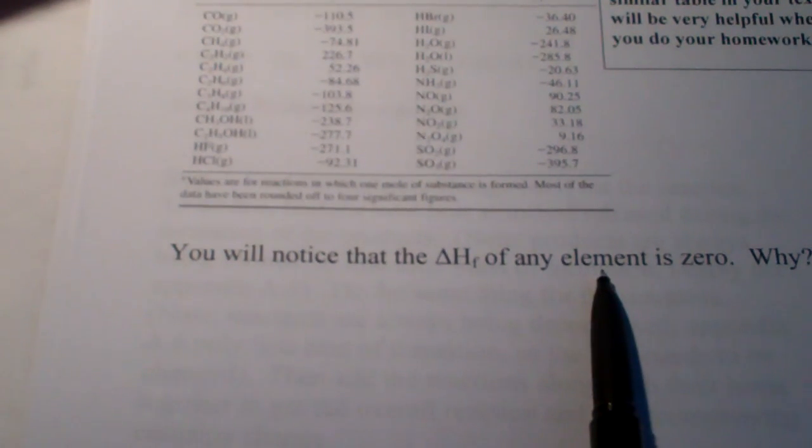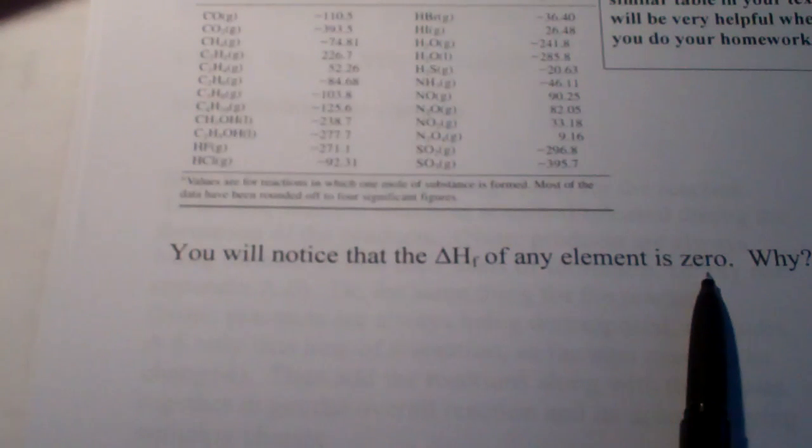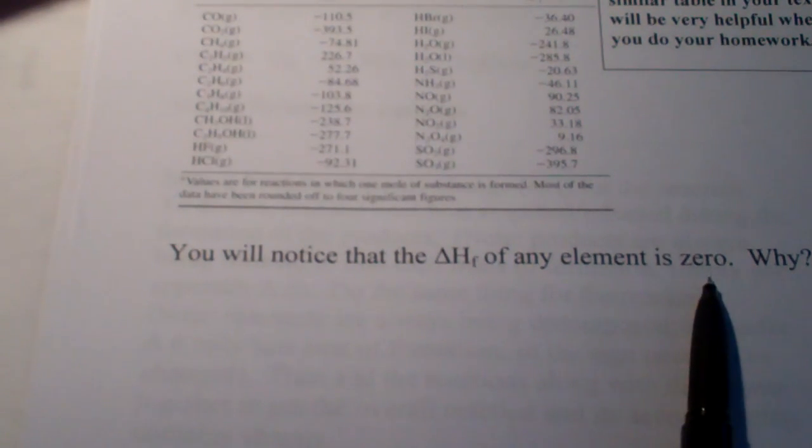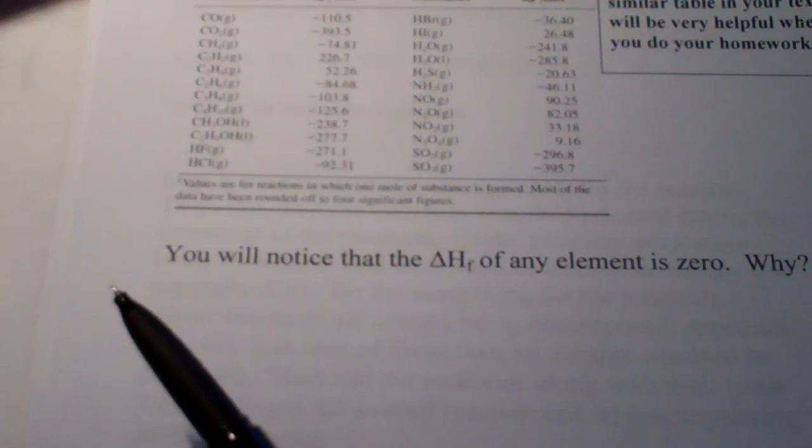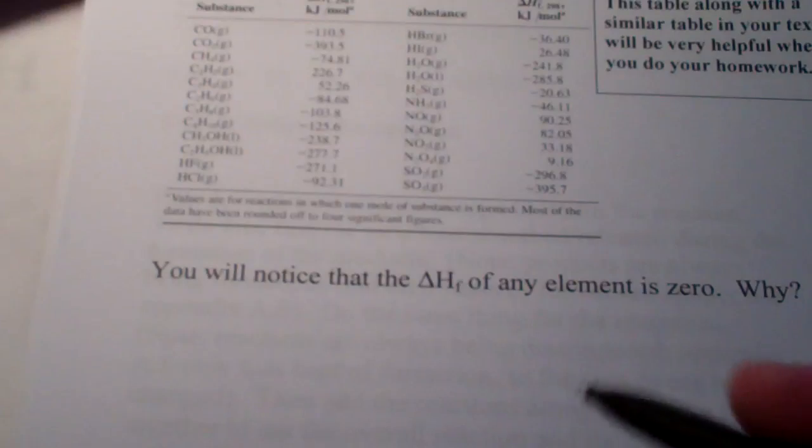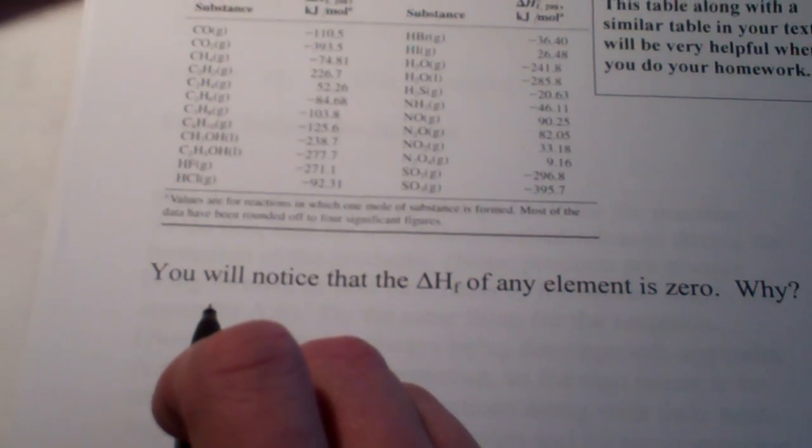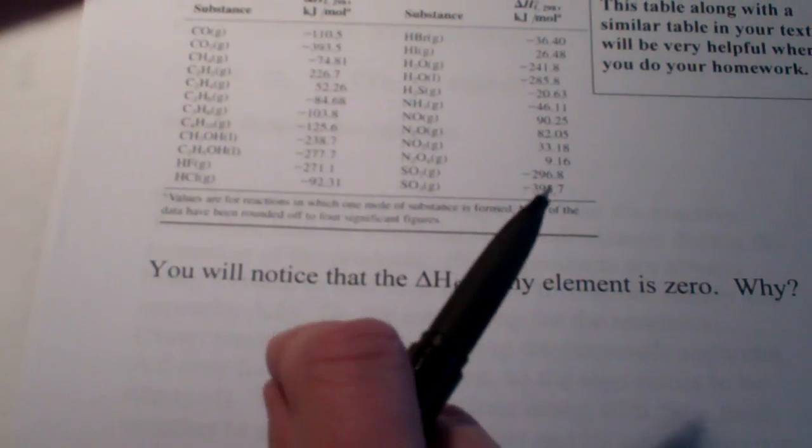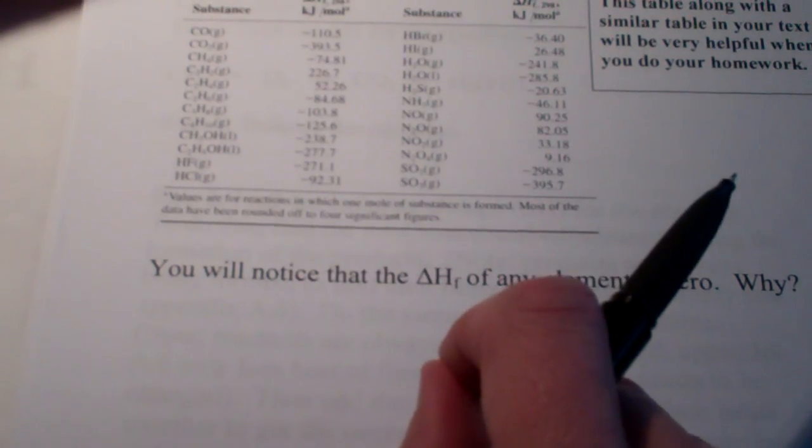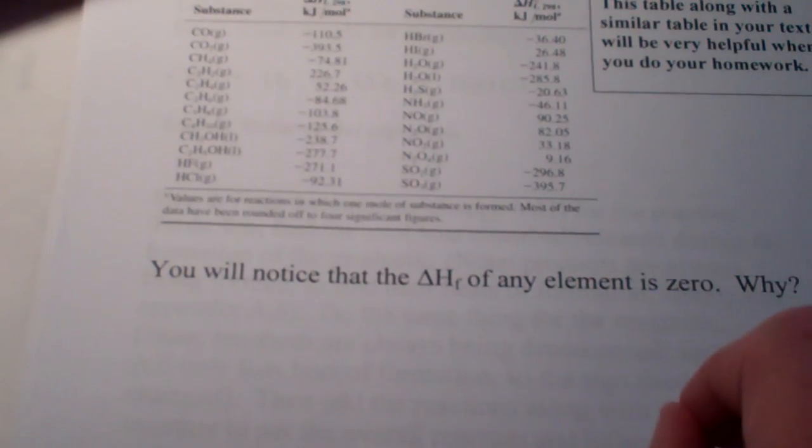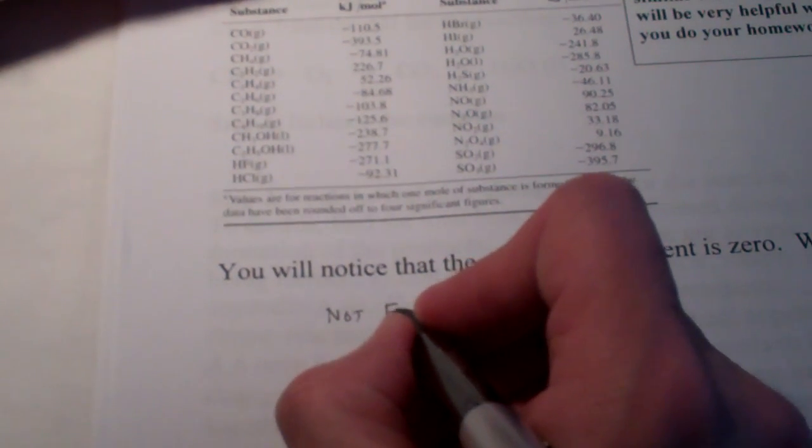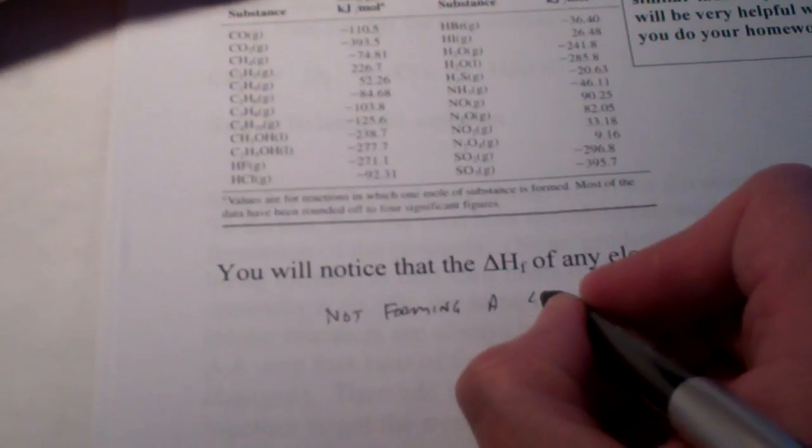Now, you will also notice when you look in the back of your book for your thermodynamic data, the heat of formation of an element is listed as zero. So why would the heat of formation of an element be zero? Think about that for a second.